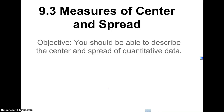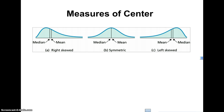In this video I'm going to talk about measures of center and spread. You should be able to describe the center and spread of quantitative data. We've got a few types of measures of center and spread. When we're dealing with measures of center we're talking about the mean, the median, and the mode — those are the three common ones, and if you take really any math class in 6th, 7th, or 8th grade they talked about them as measures of central tendency.